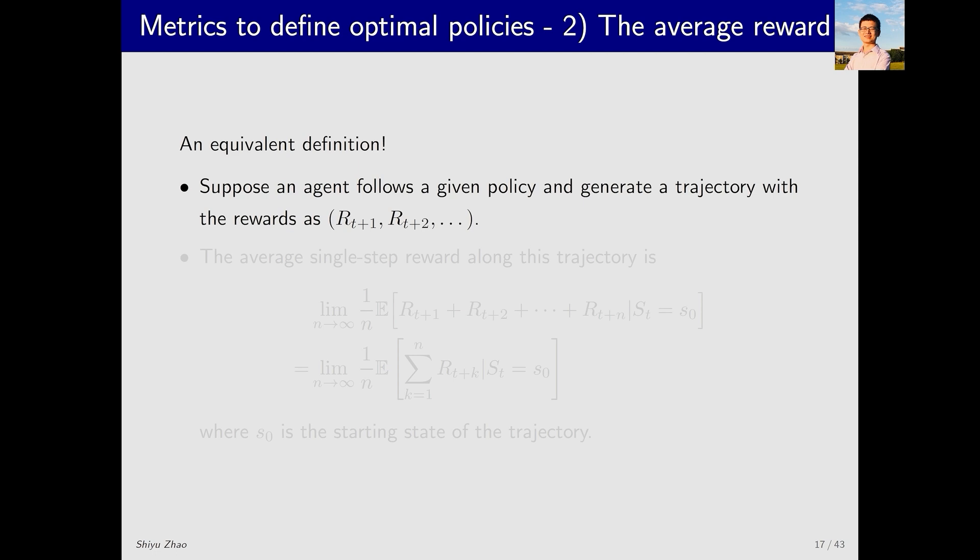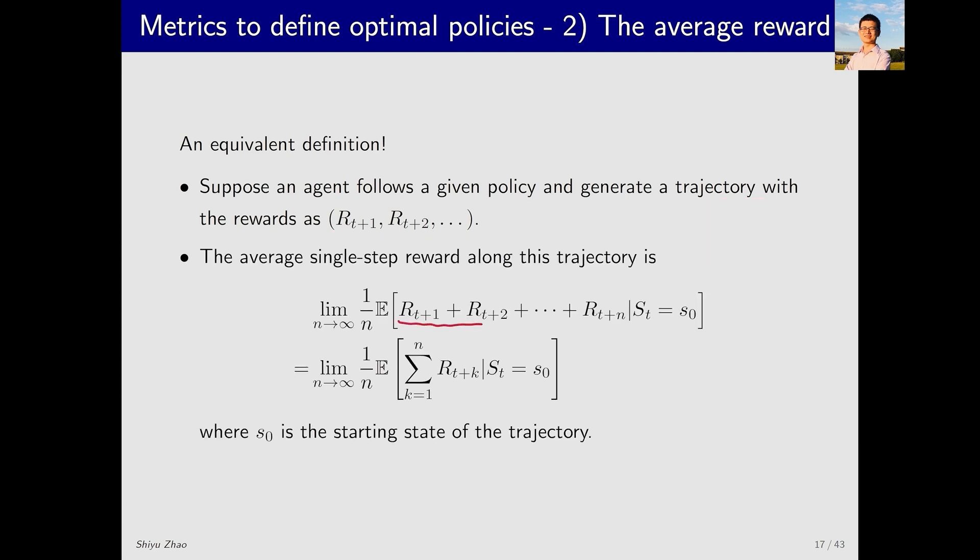Suppose an agent follows a given policy and generates a trajectory. Along this trajectory, I receive many rewards: r_{t+1}, r_{t+2}, and so on. What do I do next? I sum up all of these rewards. Let's assume I start from state s_0. After summing, I take the expectation, since these are random variables, and then I divide by n to calculate the average. Finally, I take the limit as n approaches infinity.